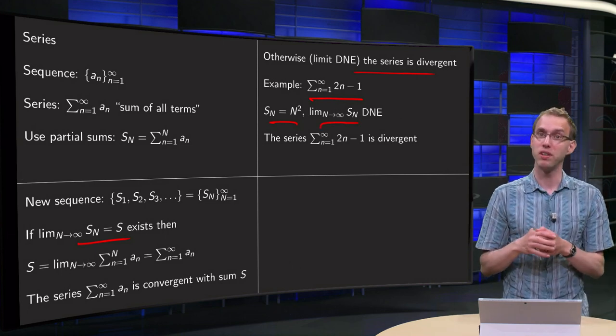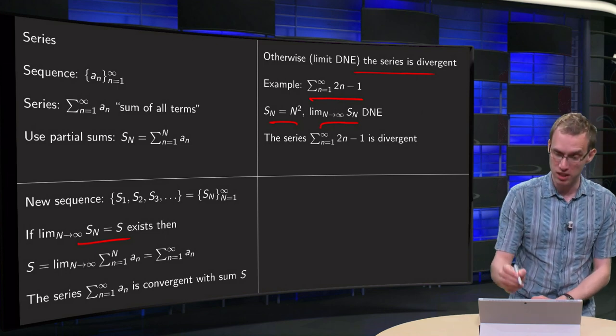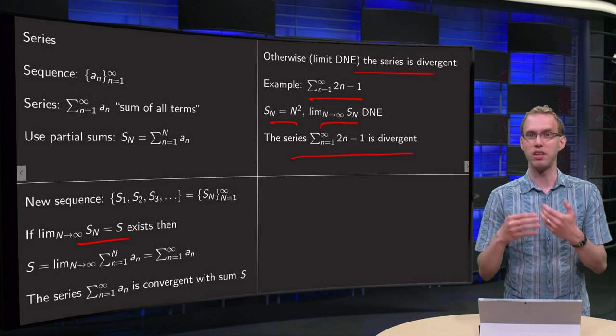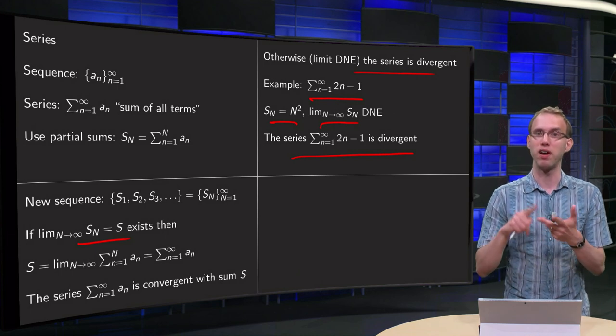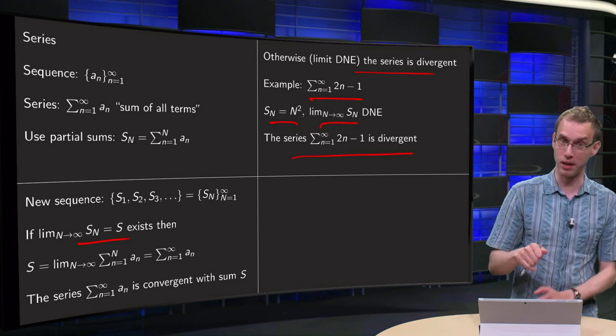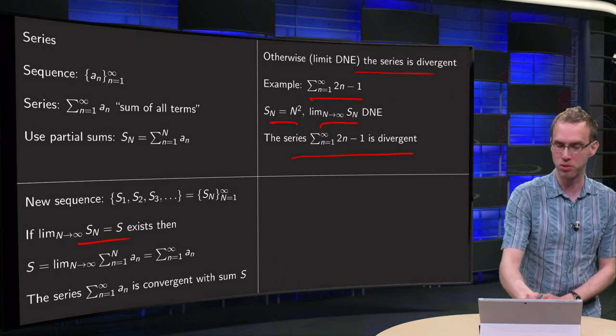So what happens if I let capital N go to infinity? Well, it blows up, it goes to infinity, so that does not exist. The series is said to be divergent. Well, you can feel it intuitively, because 1 plus 3 plus 5 plus 7 plus 9 plus 11 will become infinitely large. If you add all the terms already, all the contributions will go to infinity.